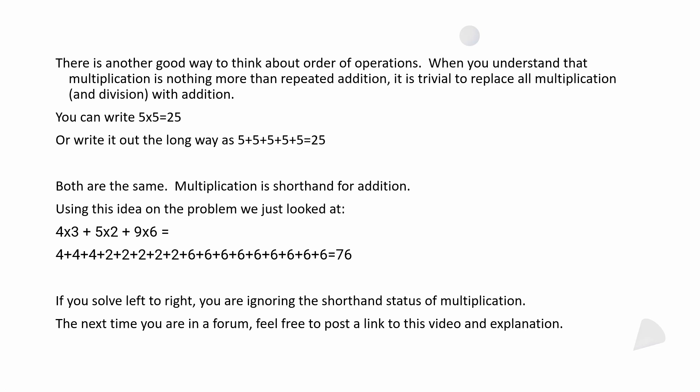There's another good way to think about the order of operations: multiplication is nothing more than repeated addition. It's trivial to replace all the multiplication with addition — 5 times 5 is 25, or written out the long way, 5 plus 5 plus 5 plus 5 plus 5 equals 25. Both are the same; multiplication is just shorthand for addition. If you use that idea on the problem 4 times 3 plus 5 times 2 plus 9 times 6 — expanding each multiplication — and add up all those numbers, you get 76. But if you blindly solve left to right, you're ignoring that shorthand status of multiplication.